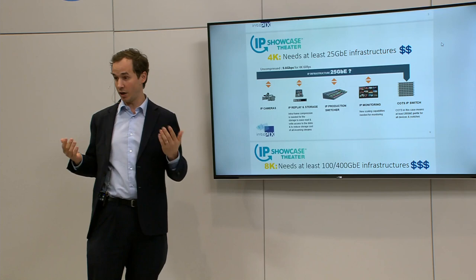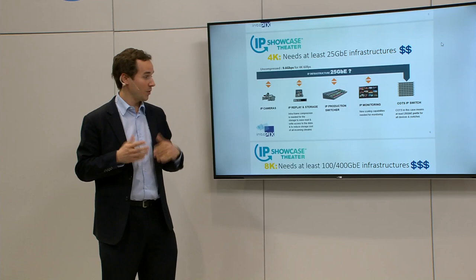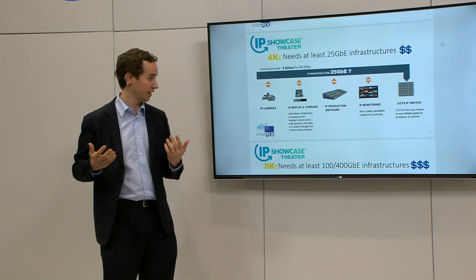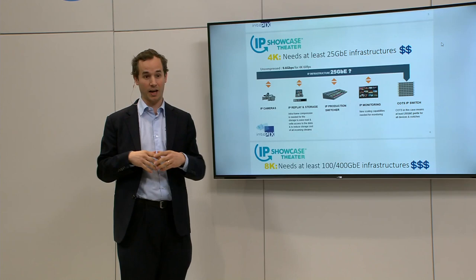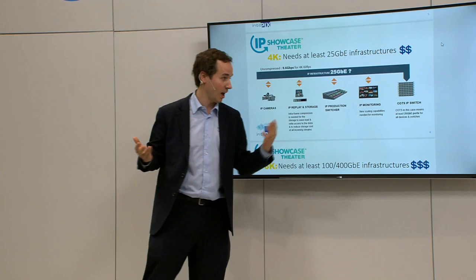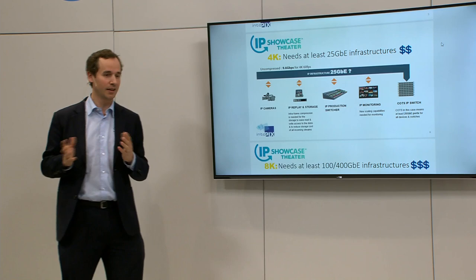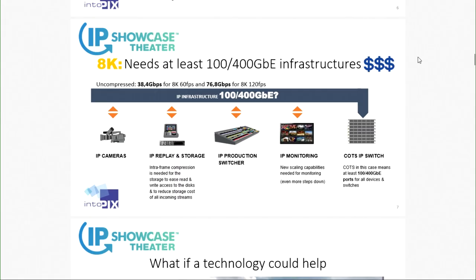If you do remote production at network level outside the studio, it's even more expensive. It's a big challenge to do 4K uncompressed for remote production. For replay storage you need some intraframe compression that does not introduce too much latency to write and read from memory and to optimize your storage. The IP monitoring with 4K streams requires additional scaling capability to monitor your network. Moving to 8K, we need at least 100 gigabit or 400 gigabit ethernet infrastructure, which is much more expensive at port and switch level.